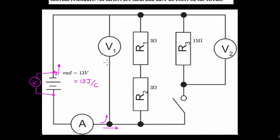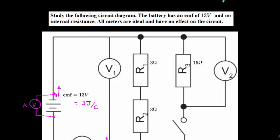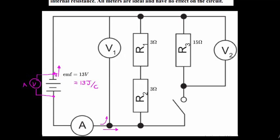If I put an ideal ammeter in a branch, all of the current will go through it because there's no resistance — why take a path with resistance if there's one with none? If I put a voltmeter incorrectly, its resistance is so high that it will consume all the energy, leaving too little for the rest of the circuit.